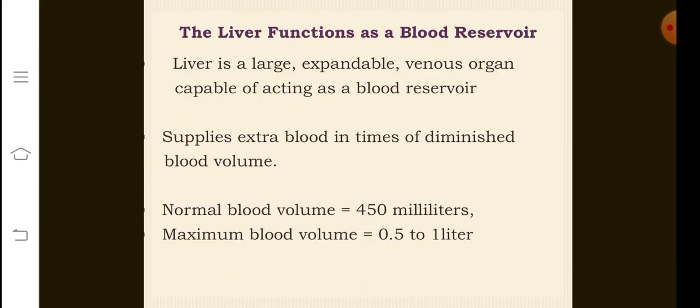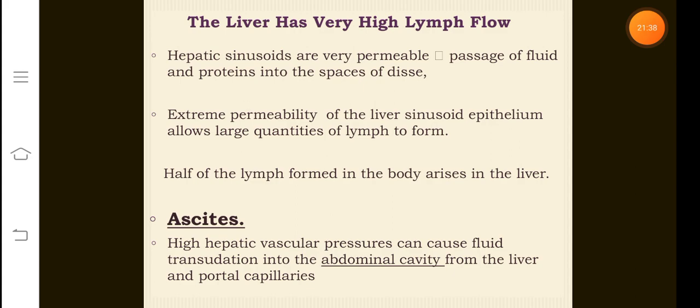The liver also functions as a blood reservoir. It is a large expandable venous organ capable of storing extra blood in times of diminished blood volume. Normally the blood volume in the liver is 450 milliliters, but maximum blood volume can reach up to 0.5 to 1 liter. The liver also has very high lymph flow because hepatic sinusoids are very permeable, and passage of fluid takes place into the spaces of Disse. When there is high hepatic vascular pressure, fluid can leak out of the liver capillaries and accumulate in the abdominal cavity — this is called ascites, which can occur due to infections, cancer, or increased alcohol consumption.